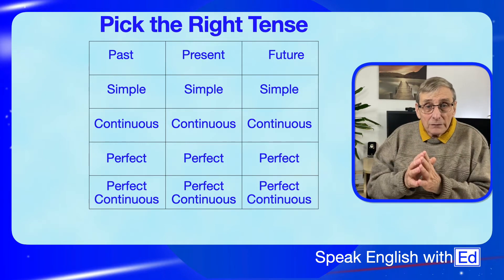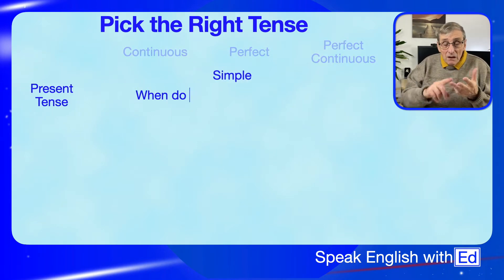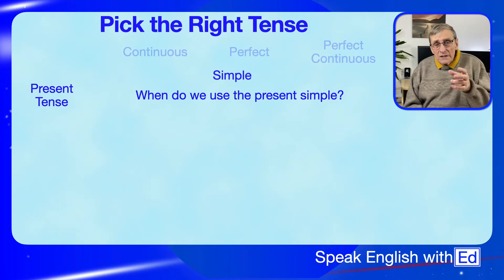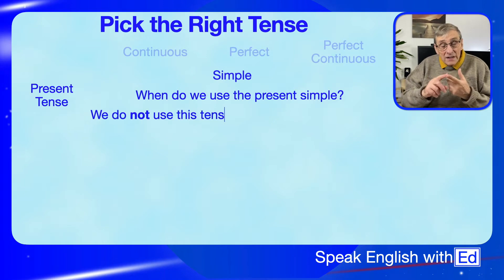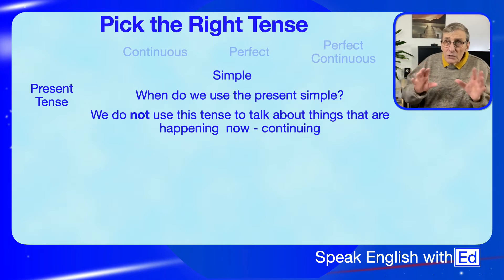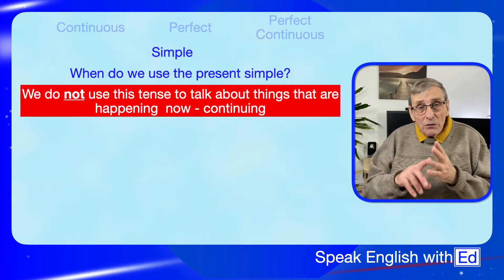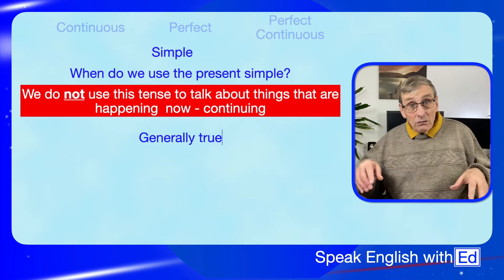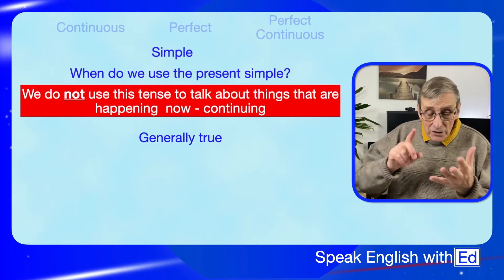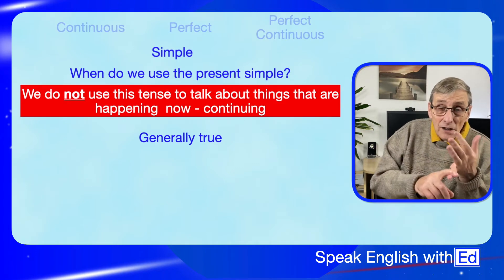So we've got 12 to look at. First of all we're going to take a look at the present simple tense. Let's talk about when we use it. We'll start with when we don't use it — that is when we're talking about now, what we're doing right this minute, or things that are continuing now. What we do use it for is things that are generally true right now. For example, the sun rises in the east — it's a truth.